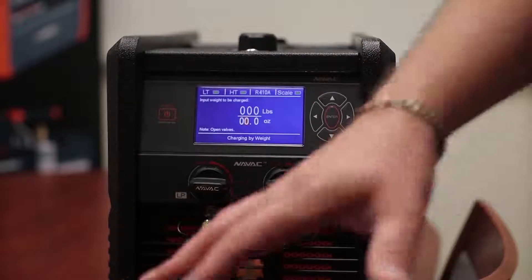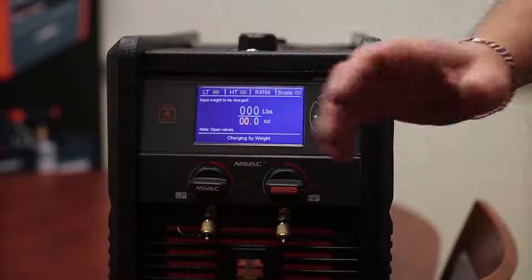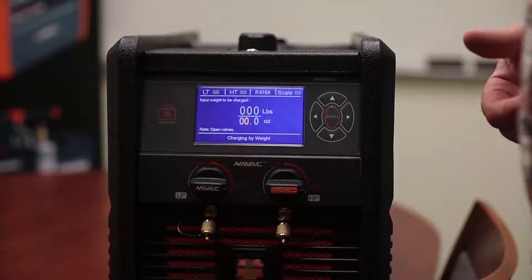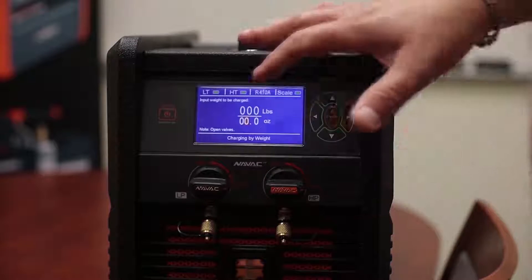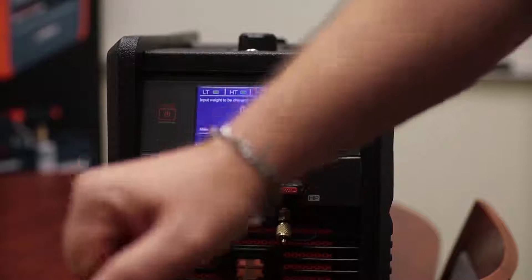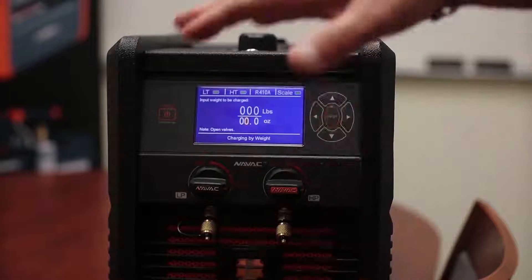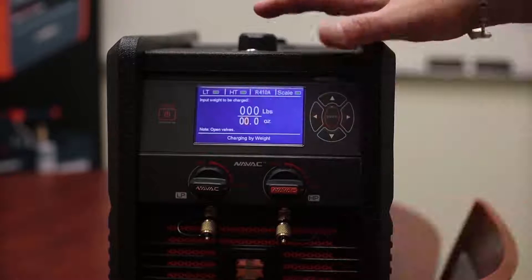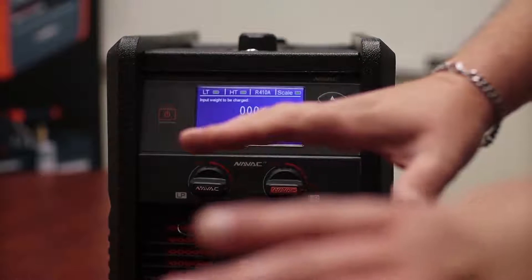Once you've got everything connected and the machine is weighing the tank, do not touch the tank. We have a habit of, oh, it's moving slow, let me juggle the tank. Well, this is very sensitive because we're talking about critical charge. So it thinks that's how much more has been added to the system and it's going to throw off your entire charge. So once you're set, don't touch the tank anymore.